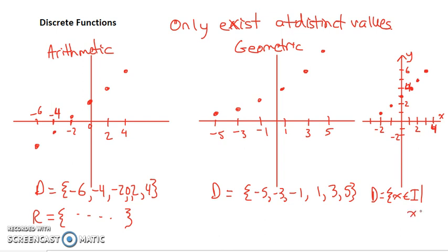So we'd say x is between negative 2, and it's equal to negative 2 or greater than that, and it's less than or equal to 4.